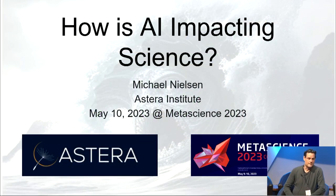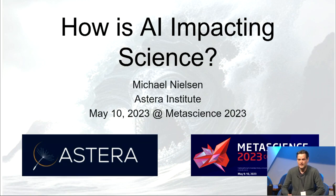As a specific focus, I'm going to talk about the impact over the last couple of years on protein biology. Probably many of you have heard that back in 2020, biologists were very surprised when a deep learning system, AlphaFold2, was shown to routinely be able to make correct near-atomic precision predictions for protein structure based just on the linear sequence of amino acids making up the protein. Here we have each letter in this sequence represents a single amino acid, you have a linear chain, and somehow it folds up into this protein shape. This is human insulin over here.